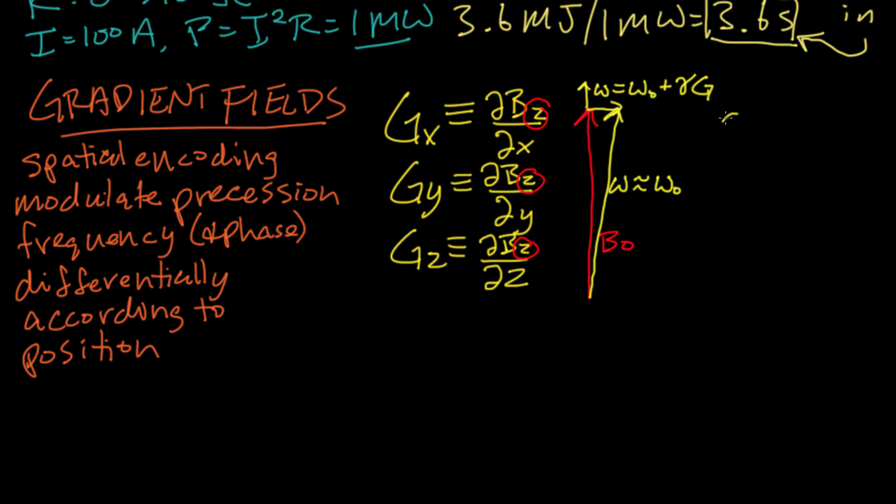The z direction, which is defined by the direction of the main field, is along the axis of the bore as shown before. For a z gradient coil, the symmetry of the gradient coil windings are as follows. They have the symmetry of two counter-rotating loops, and as you can imagine, the z component of the field that's generated by those loops will have a strong dependence on z.